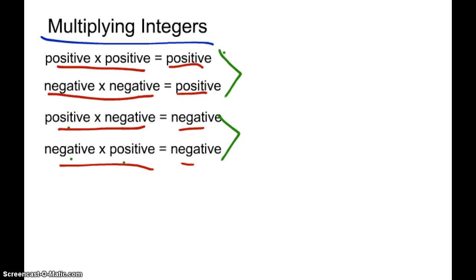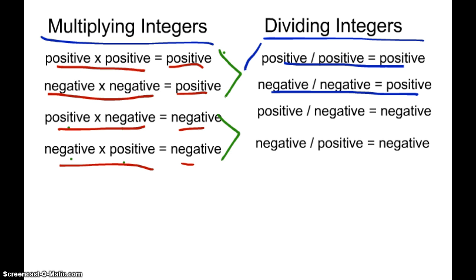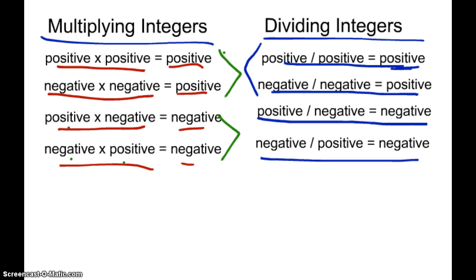You might want to write that down: same sign gives a positive answer, different signs give a negative answer. And when you are dividing integers, you have the same rules. Negative divided by a negative is a positive — same signs give a positive. Positive divided by a negative is a negative, and a negative divided by a positive is a negative. Also, this symbol right here means divided by.